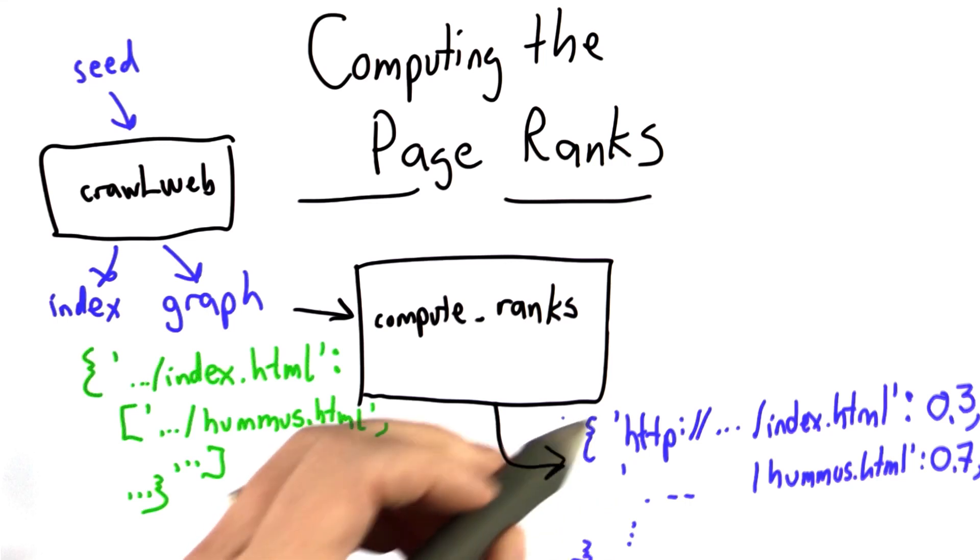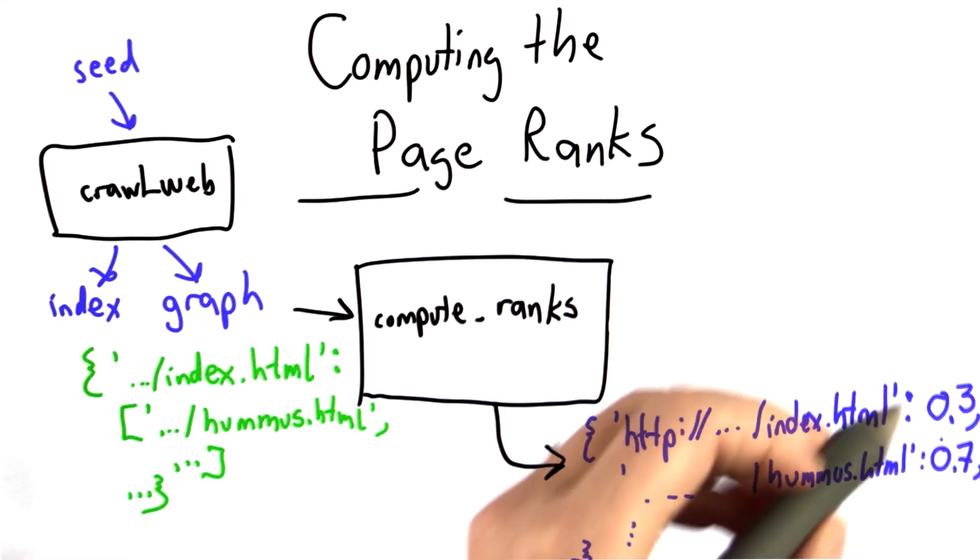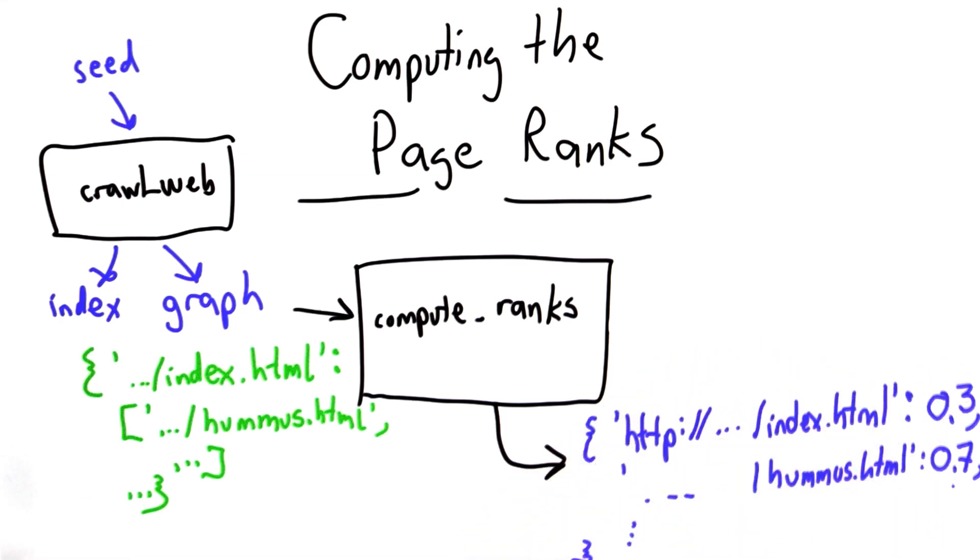So the output from compute_ranks will be a dictionary, giving for each URL a rank, the ranking that we compute using our formula. And the higher the rank, the better.